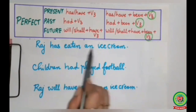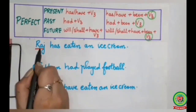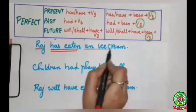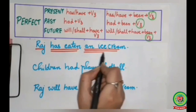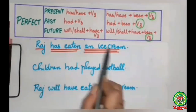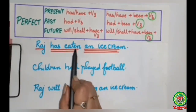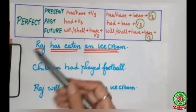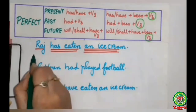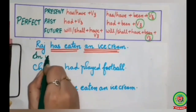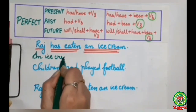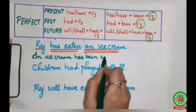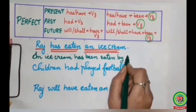Example: Raj has eaten an ice cream. Raj is the subject (single underline), has eaten is the action word (double underline), an ice cream is the object (triple underline). An ice cream will come in the beginning, Raj will go to the last. Eaten is already in its past participle form. After has we will add the word been. The sentence becomes: An ice cream has been eaten by Raj.